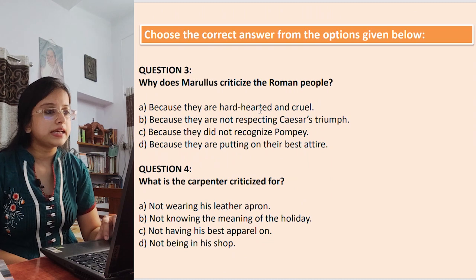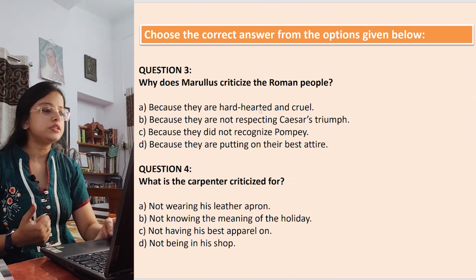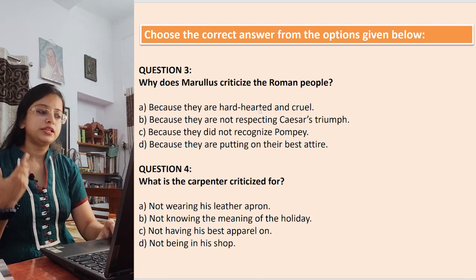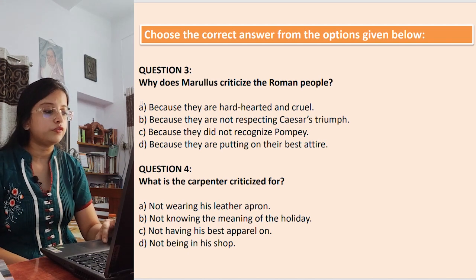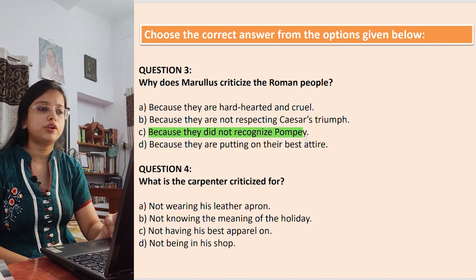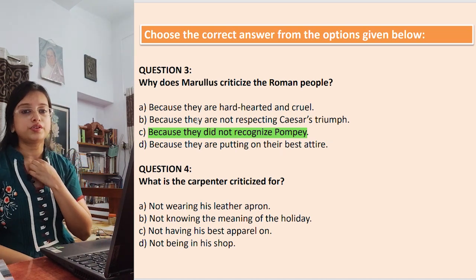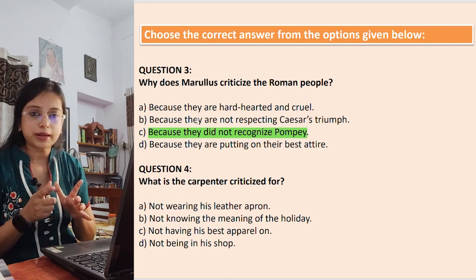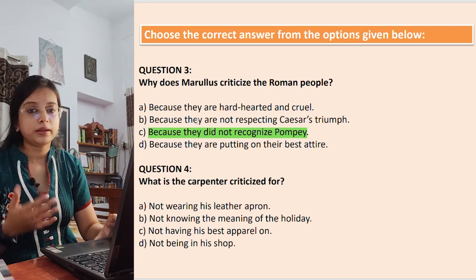Question 3: Why does Murullus criticize the Roman people? Options: because they are hard-hearted and cruel; because they are not respecting Caesar's triumph; because they did not recognize Pompey; because they are putting on their best attire. The answer is because they did not recognize Pompey — once upon a time they were very fond of Pompey. The first option also seems plausible, but the better answer must mention Pompey specifically.